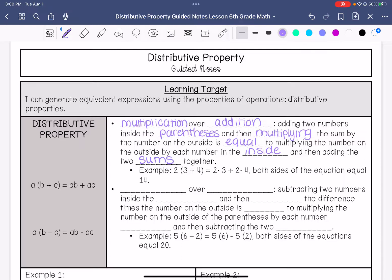So I have 2 times 3 plus 4. This is basically the same as 2 times 3 plus 2 times 4. So that would be 6 plus 8, which is 14. And this side also equals 14.